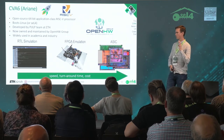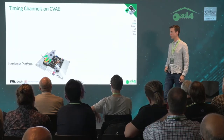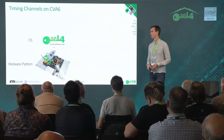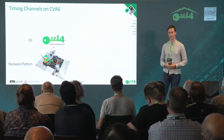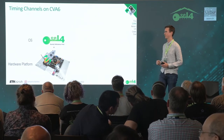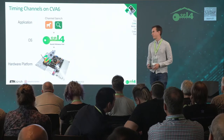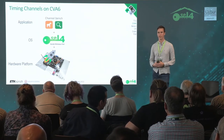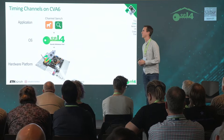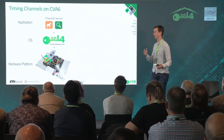I'm going to show you how we measure timing channels on CVA6. We start by mapping CVA6 onto an FPGA as our hardware platform and run seL4 as the operating system — specifically an experimental version with time protection support. On top of that, we run ChannelBench as two threads: one Trojan and one Spy, separated and isolated by seL4, trying to communicate with each other.